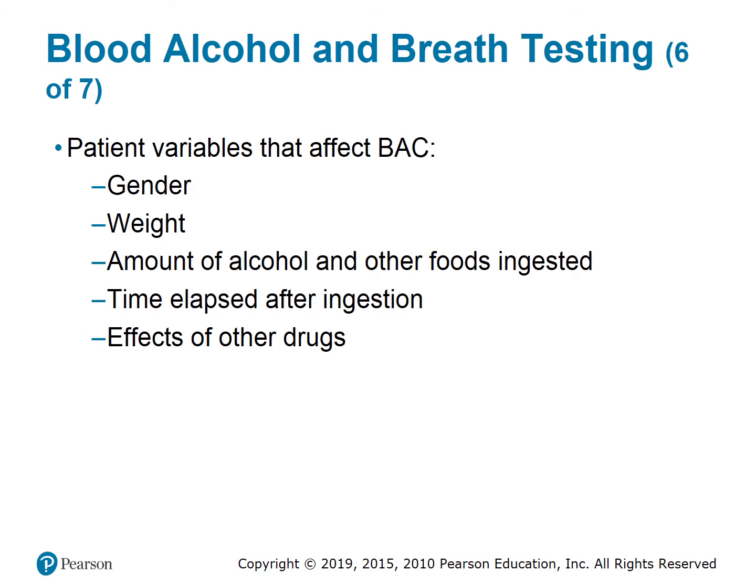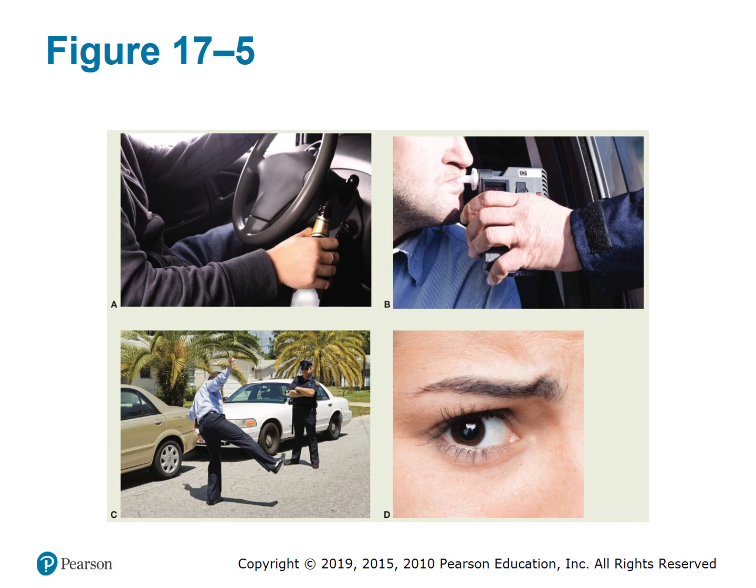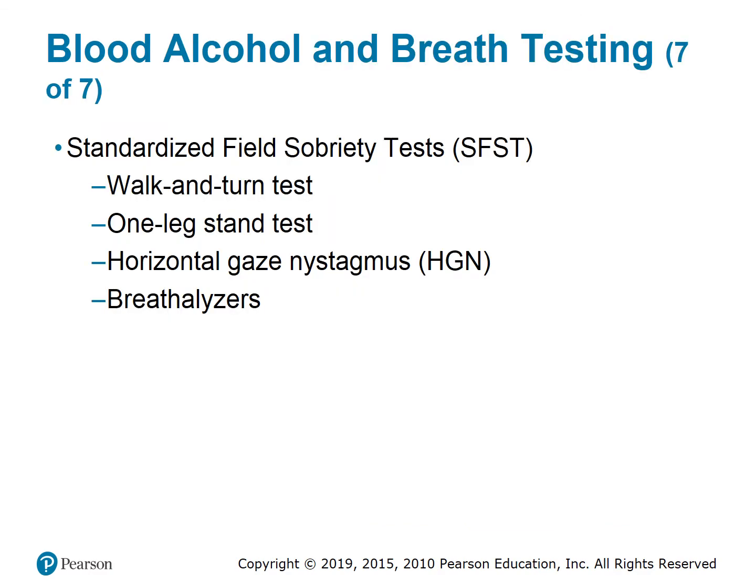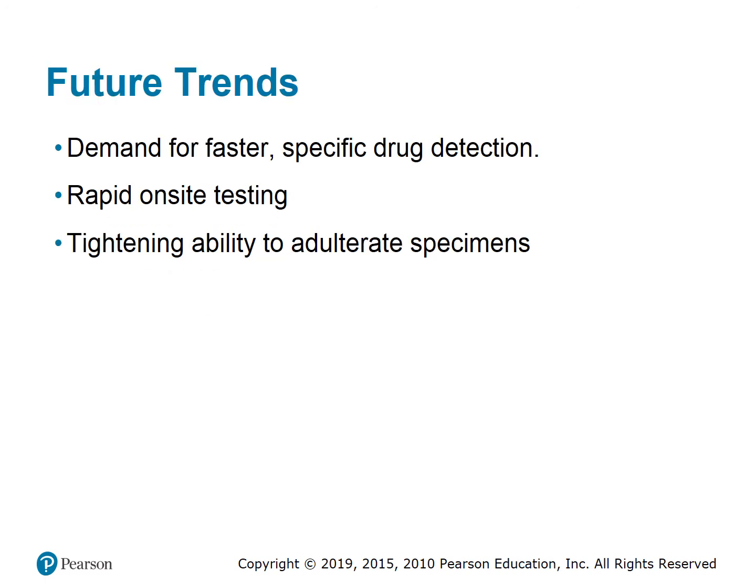Patient variables that affect BAC are gender, weight, amounts of alcohol and other foods ingested, time elapsed after ingestion, and effects of other drugs. Blood alcohol and breath testing methods include the standardized field sobriety test, walk-and-turn test, one-leg-stand test, horizontal gaze nystagmus, and breathalyzers. There is increasing demand for faster, more specific drug detection, rapid on-site testing, and tighter ability to detect specimen alteration.